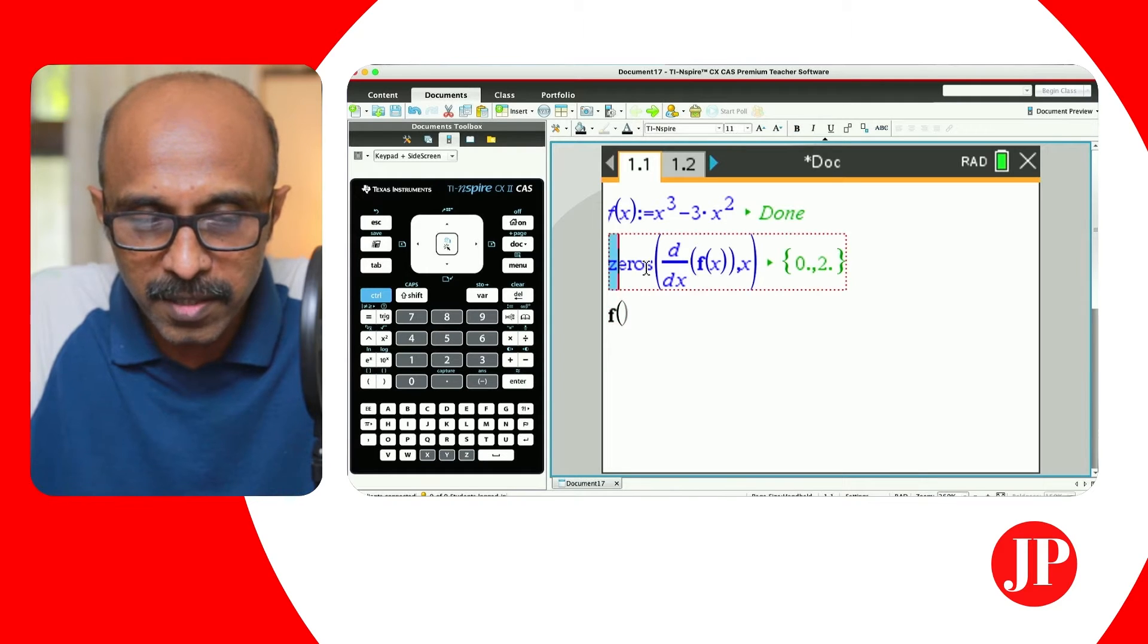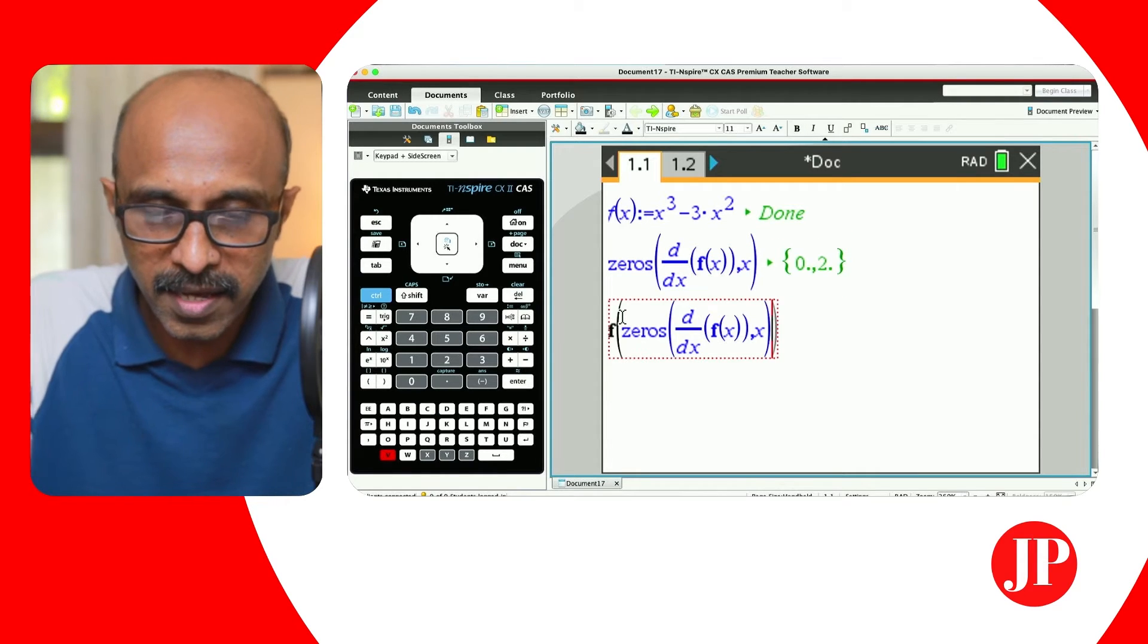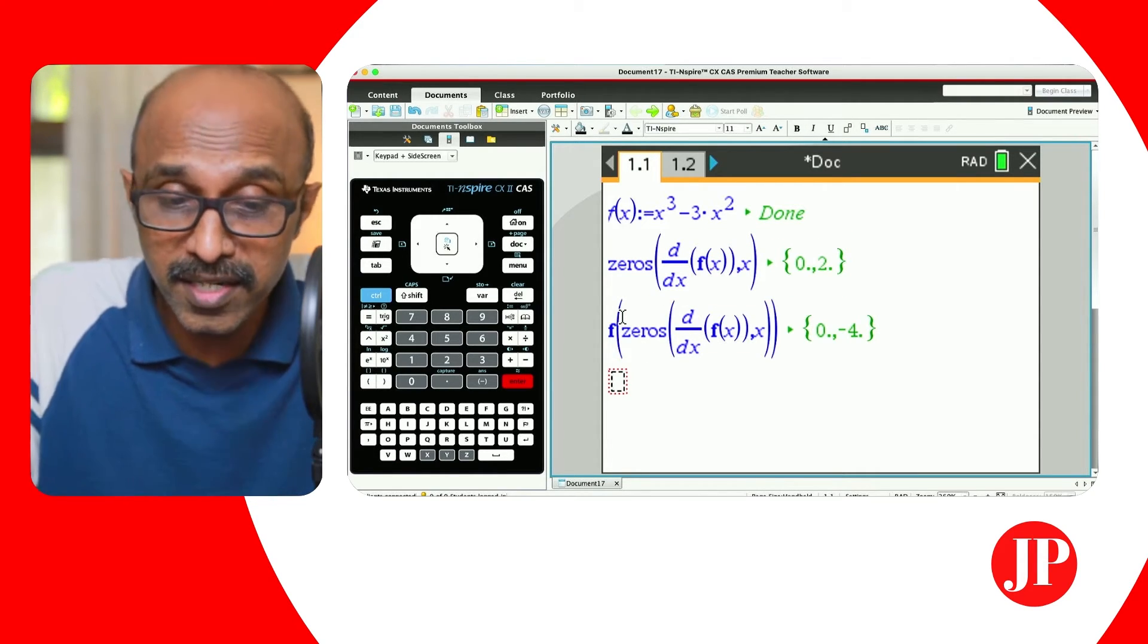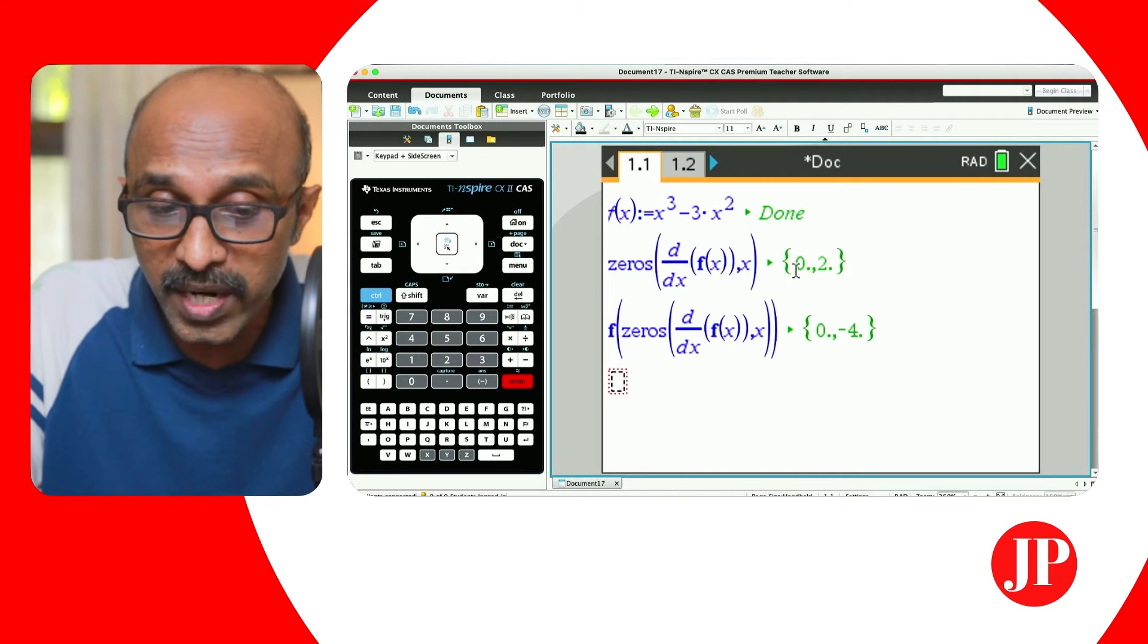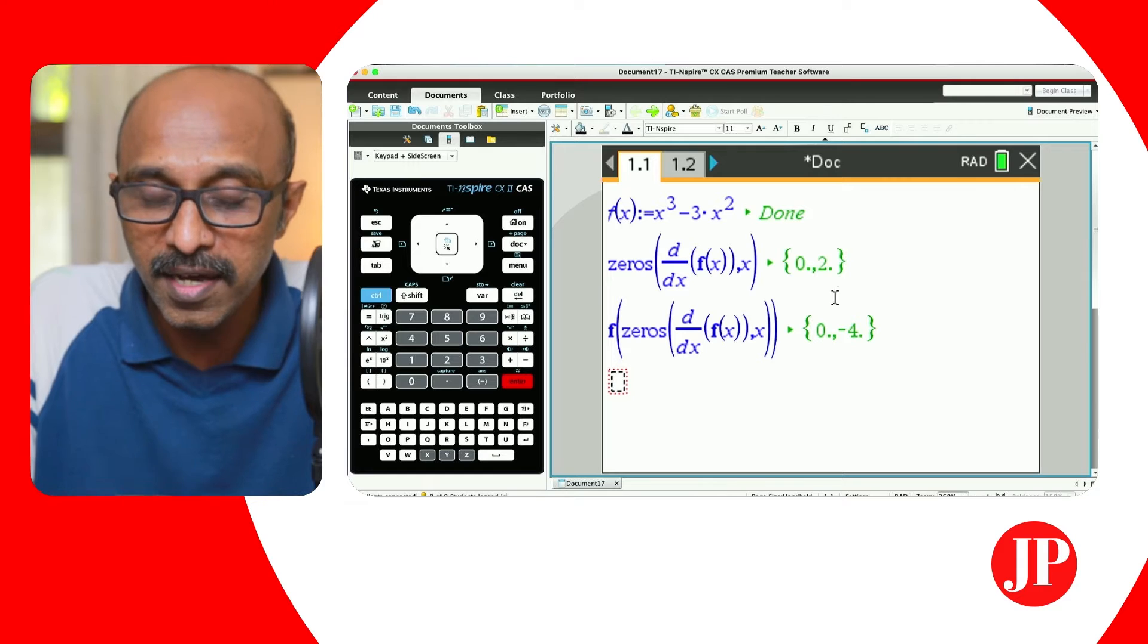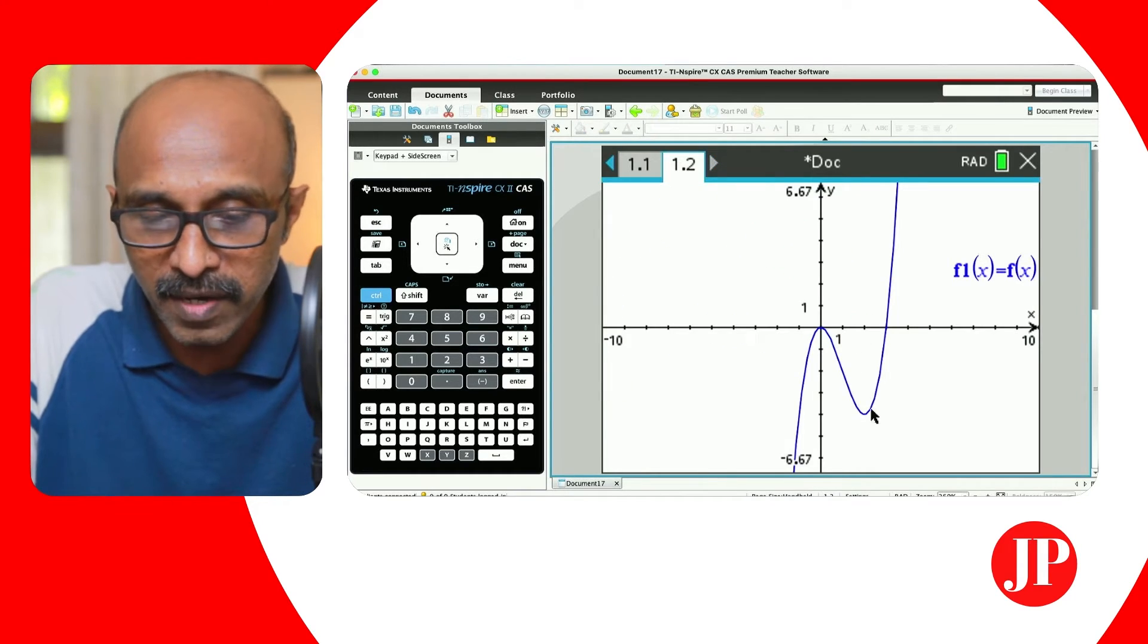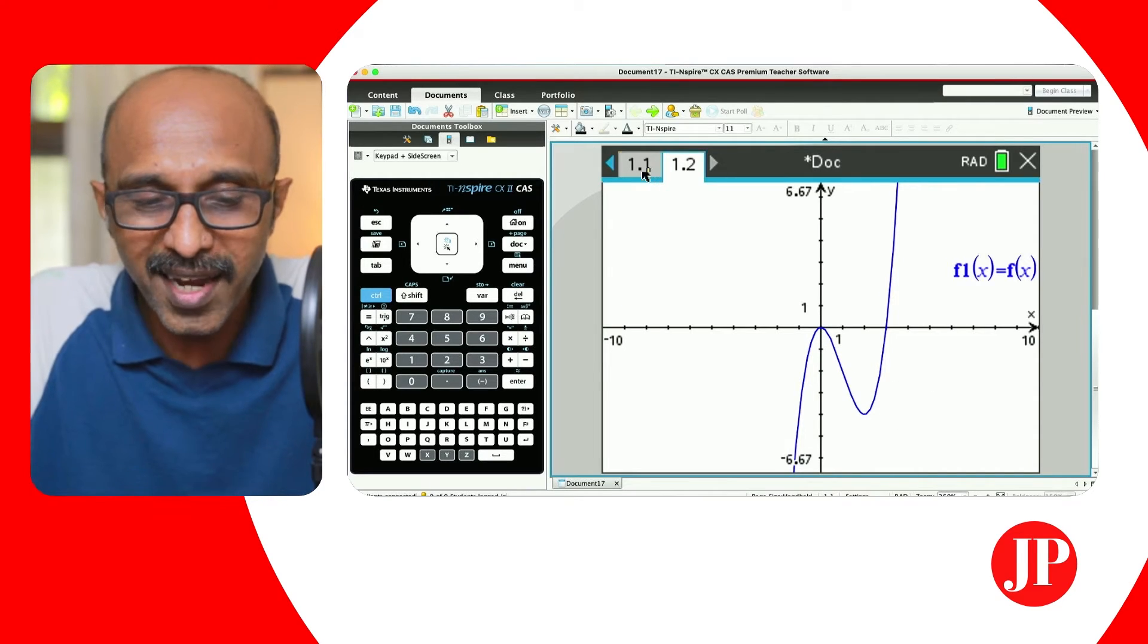I'm just going to copy this part and bring it in here, using it really smartly. These are the y coordinates. So when x is zero, y is zero, those are the coordinates of the first stationary point. And x = 2, y = -4 as you can see even from the graph, that's going to be the coordinates of the second stationary point.